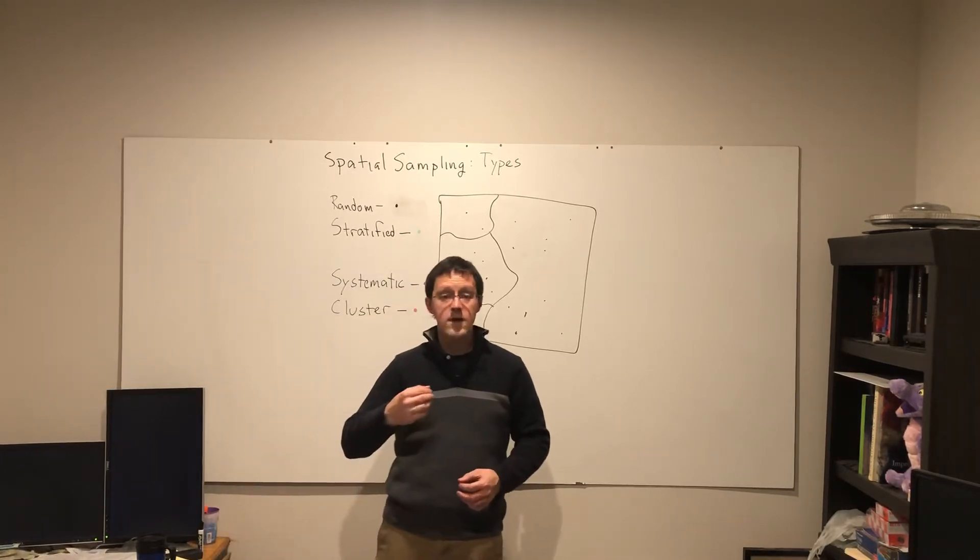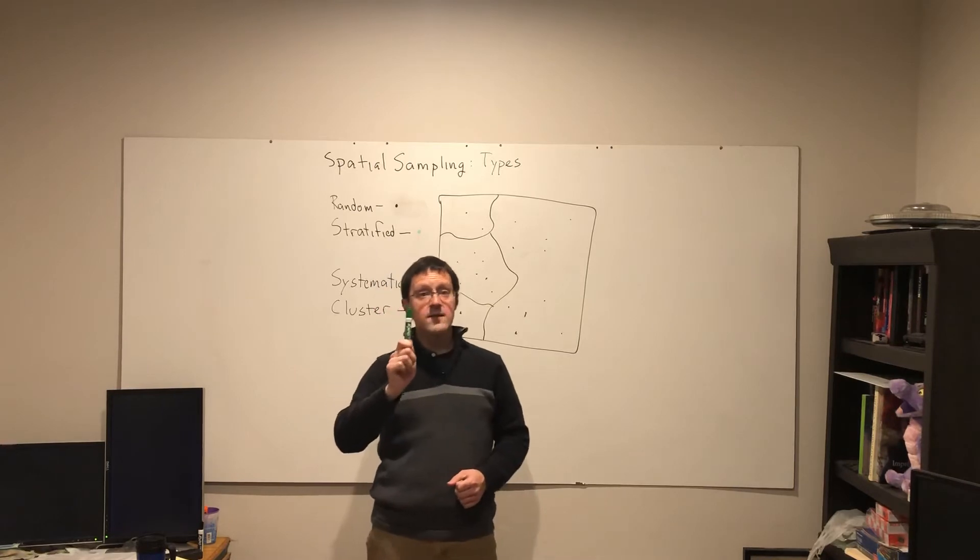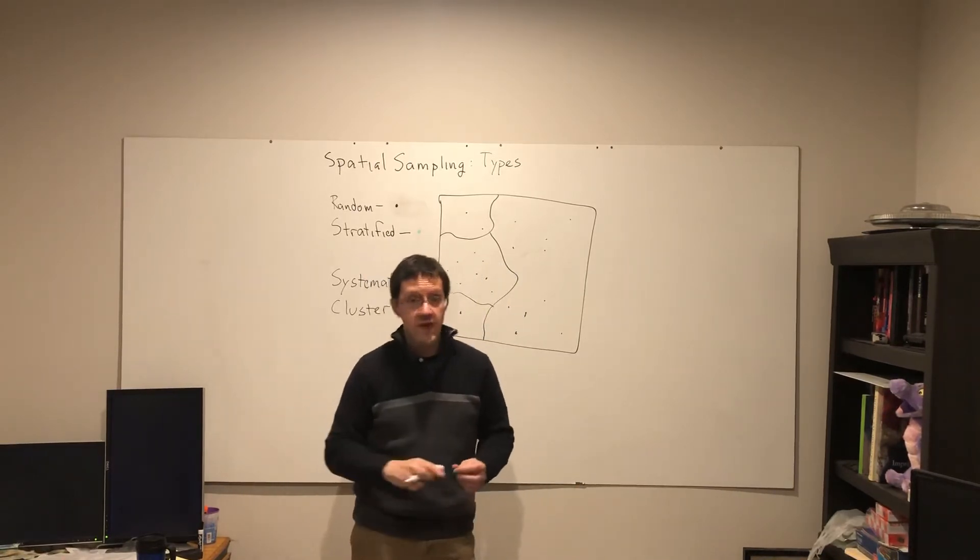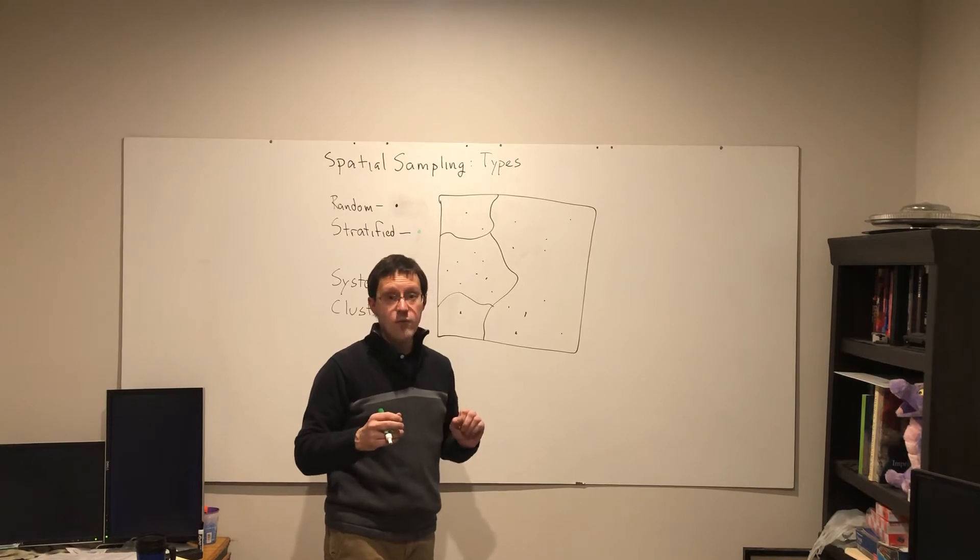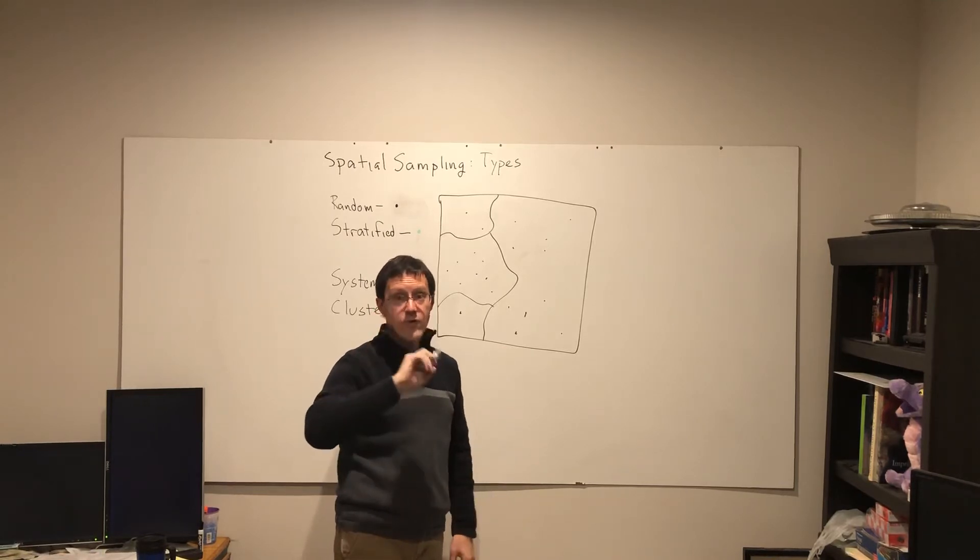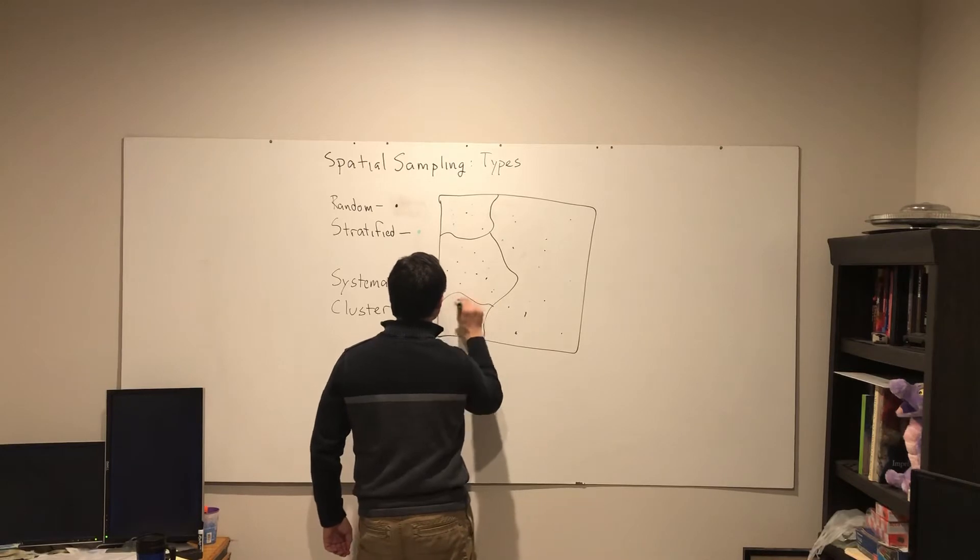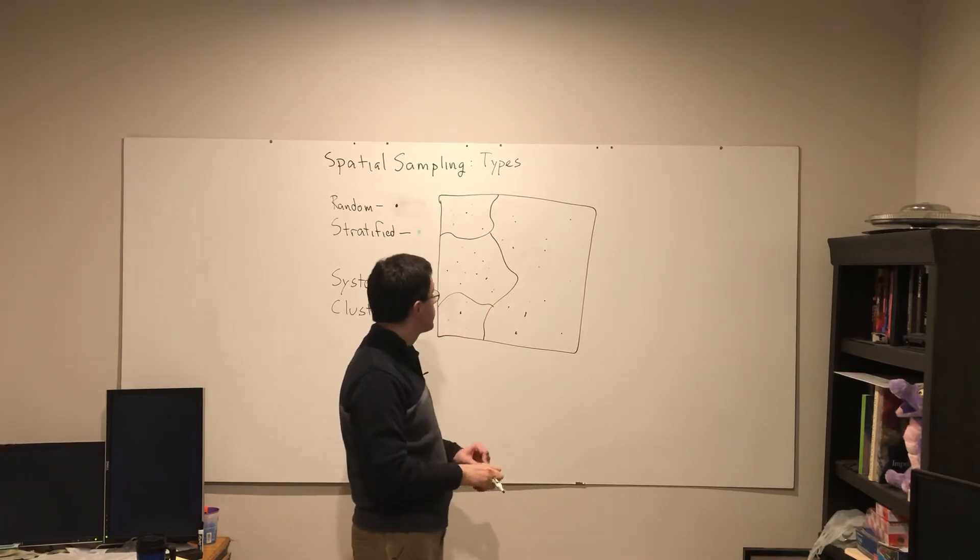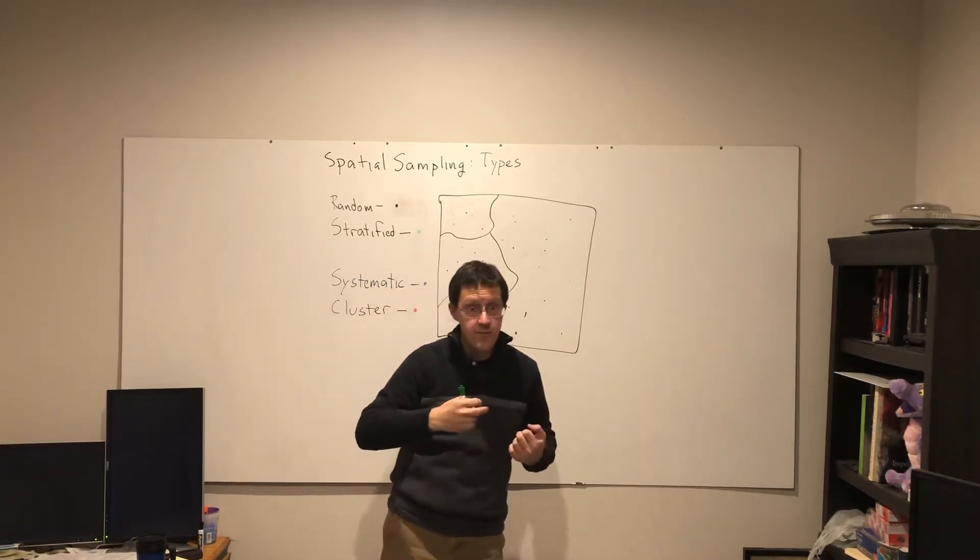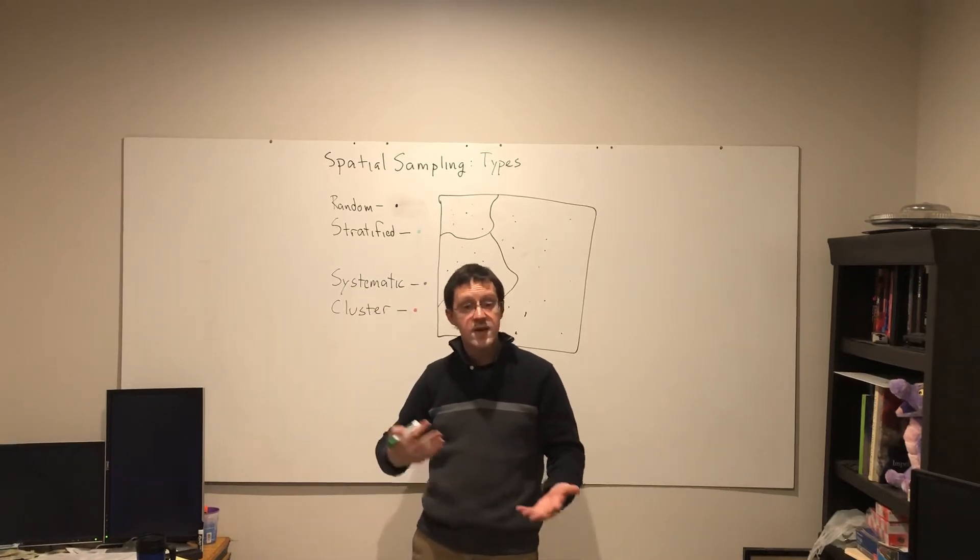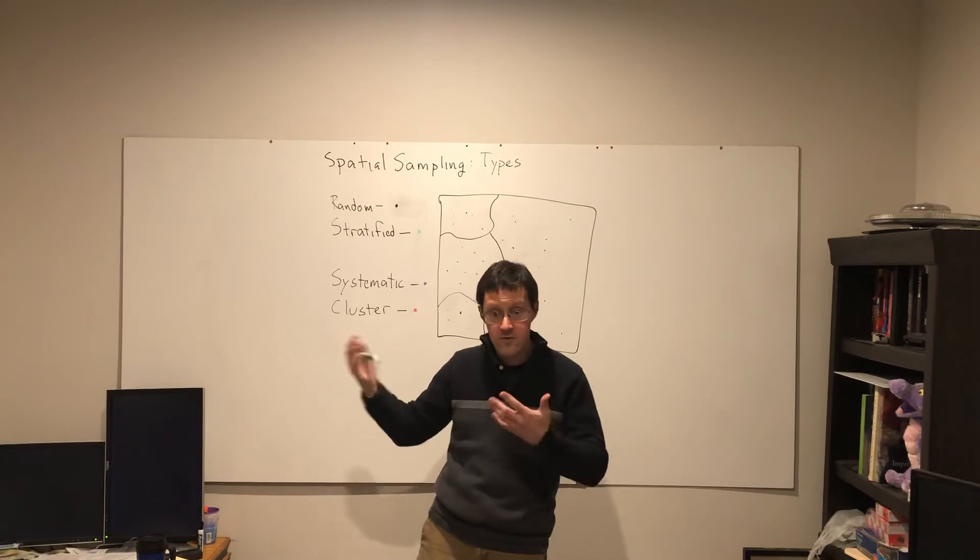To ensure I don't miss anything, I could stratify by the four regions that I have put here. Instead of 20 random points, I might want five random points within each region. So now I have stratified, but whereas in the previous video I stratified the majors by class, here I am stratifying by sub-regions within the study area, hence spatial stratification.